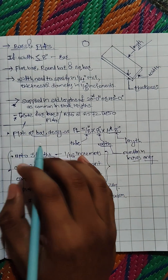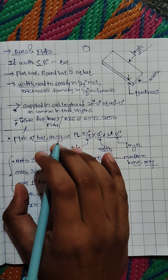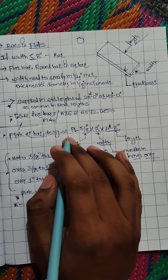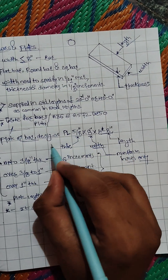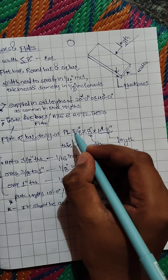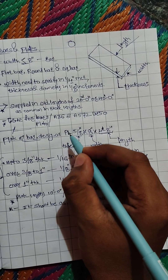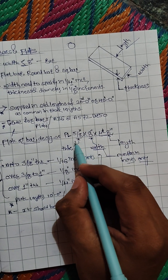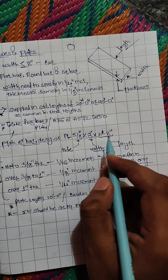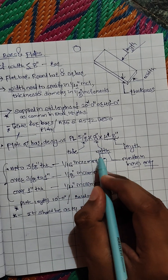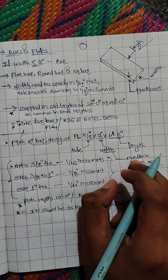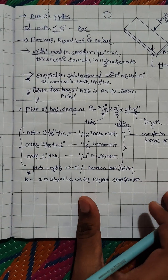In a previous video I talked about bars, and now we will see plates. Generally for designating plates and bars we use a style like PL 5 by 8, 8 and 4 feet 8. Instead of PL we can also use flat bar. The first value is the thickness, the middle one is the width, and the last one is the length. Note that width must always be mentioned in inches only.